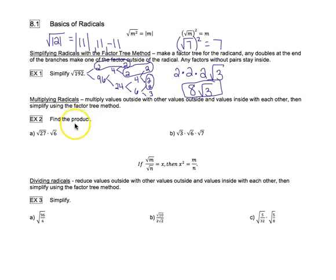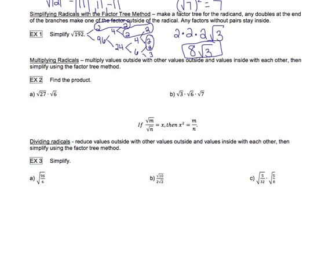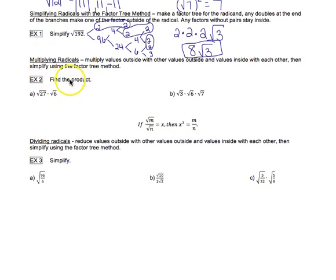Then we are going to look at multiplying. So this is simplifying products of radicals is what we're doing here. And the rule is that we're going to multiply the values outside with other values that are outside. The values that are inside, we're going to multiply with other values that are inside. And then once we've done that, we'll simplify using the factor tree method.